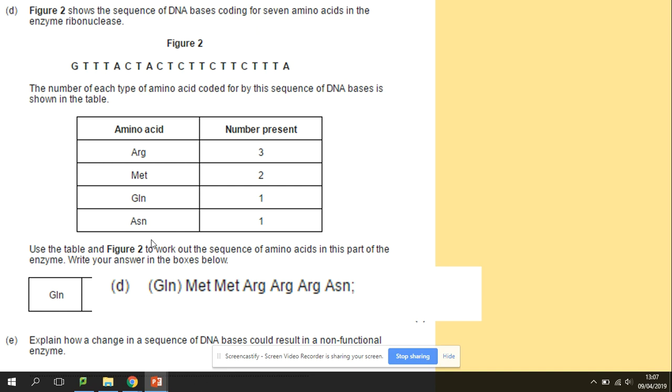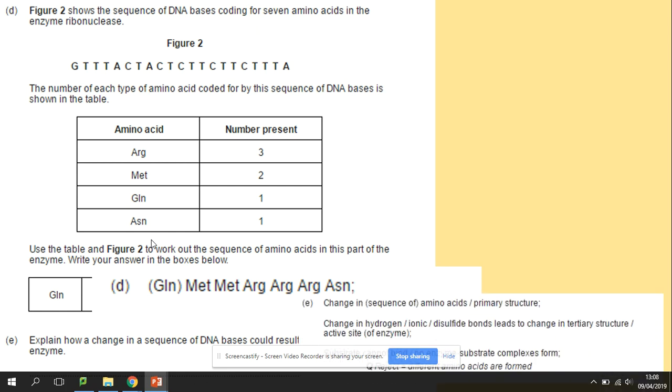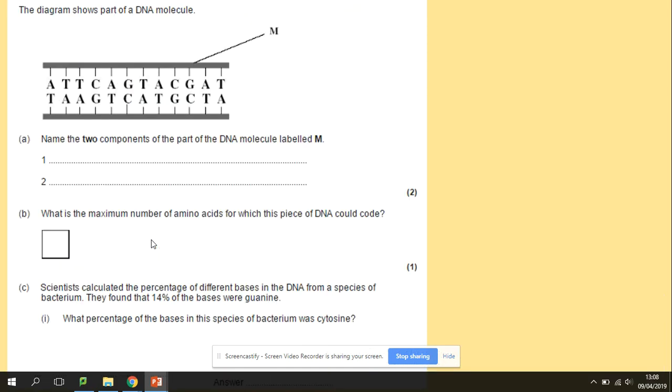Question E. Explain how a change in a sequence of DNA bases could result in a non-functional enzyme. So what will happen here? You need to think about the structure of the proteins, because all enzymes are proteins. The primary structure is affected by the sequence of DNA. So if that will change, it will change the final tertiary structure of the enzyme. So it's not going to be working as it should. A change in the sequence of amino acids, change in the tertiary structure by change in the hydrogen bonds. So the enzyme substrate complexes are not going to be formed due to change of the active site shape.